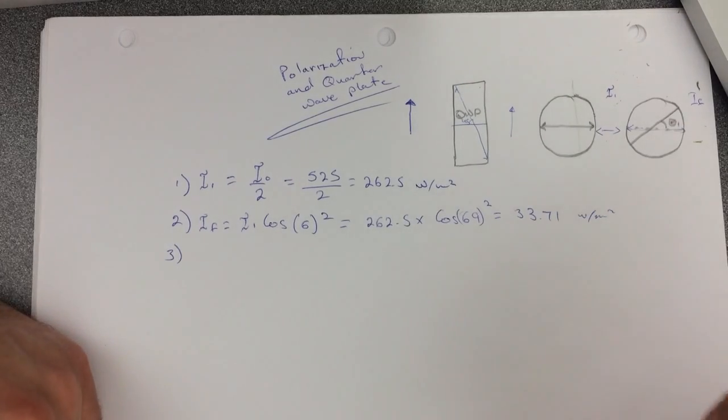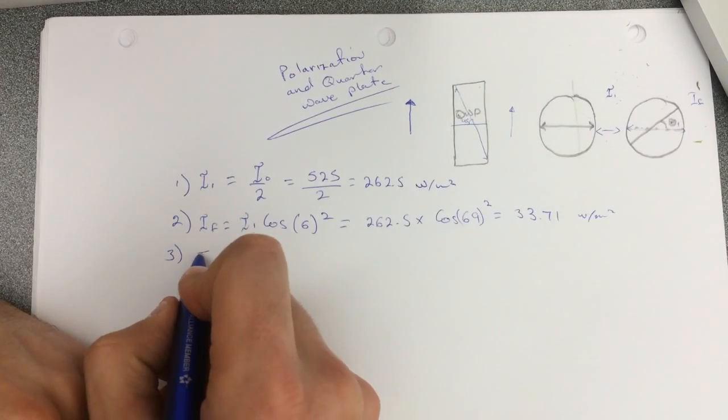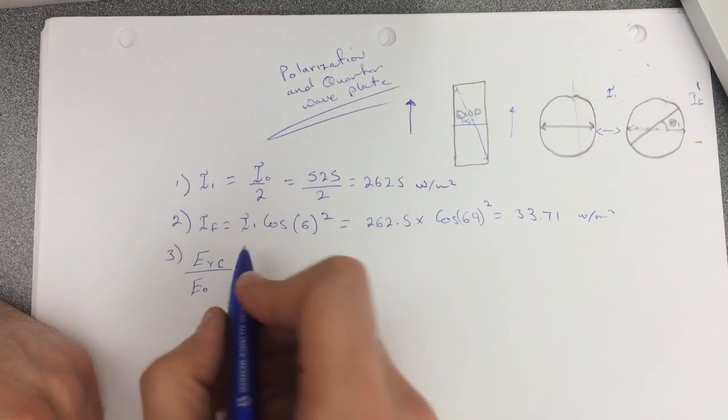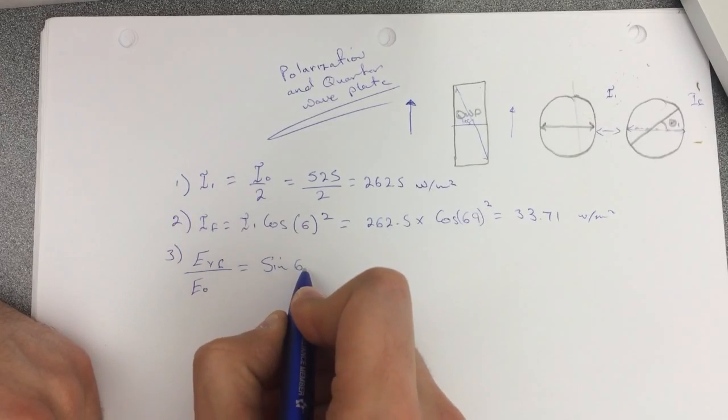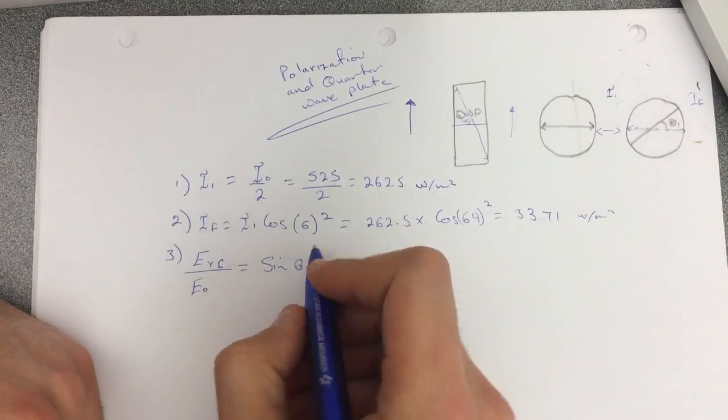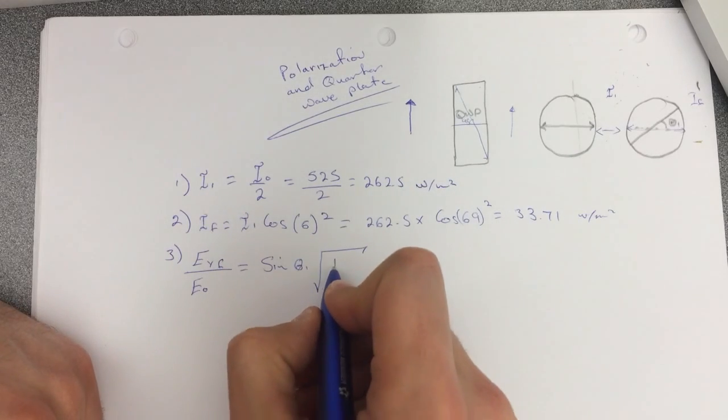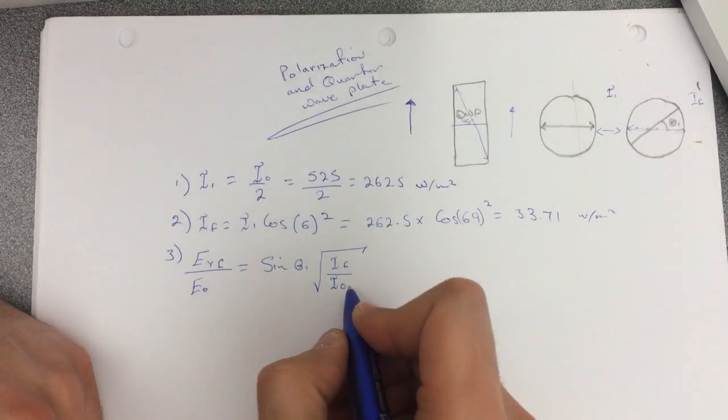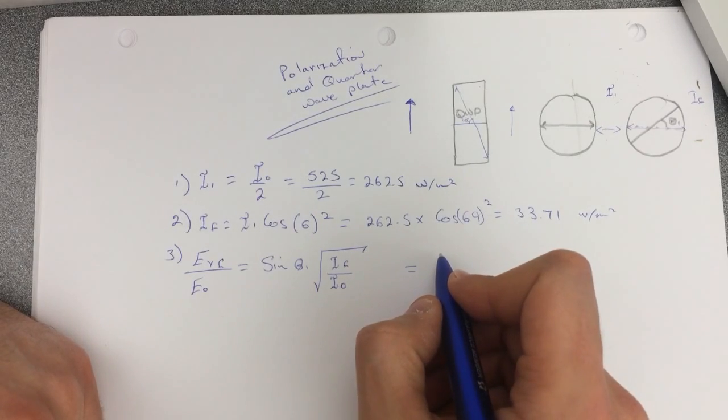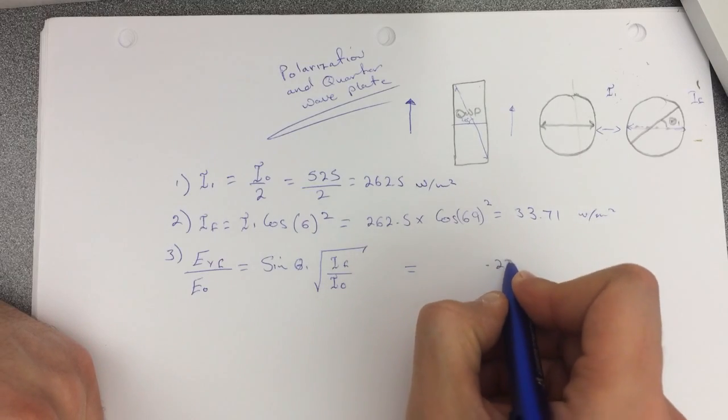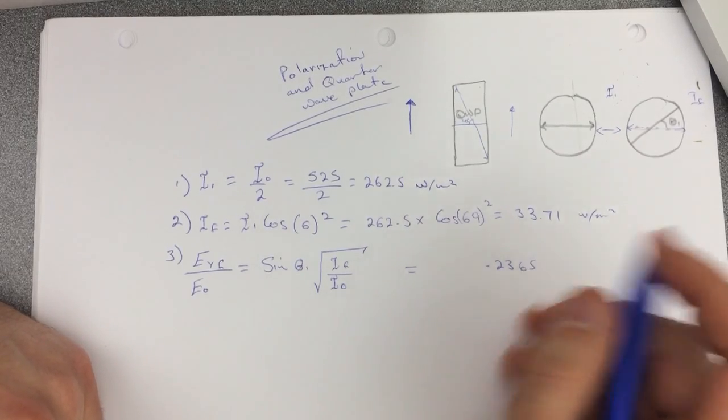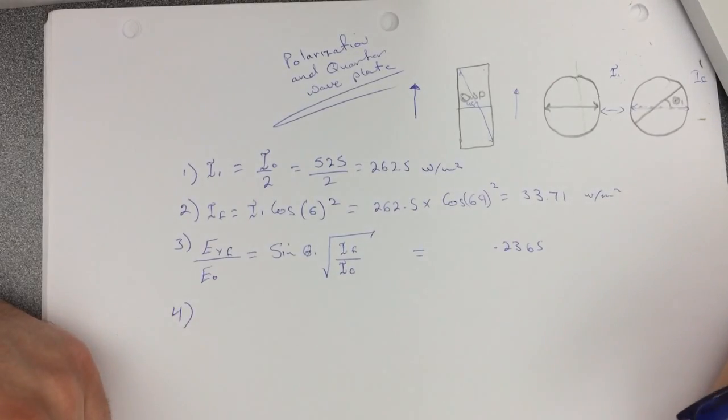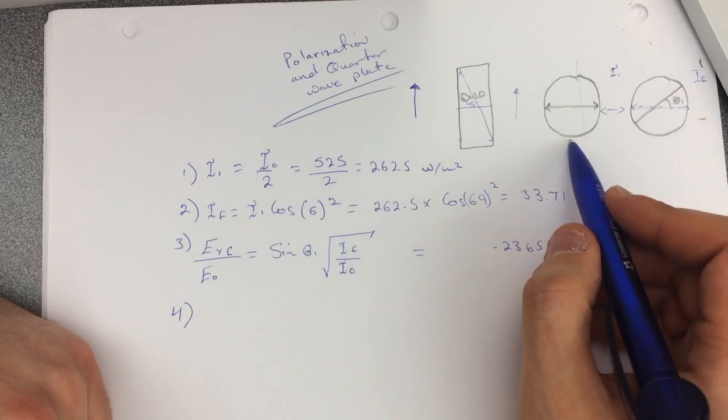All right, so question number three is asking this guy. I really am gonna get back to you with this but here's the equation, solve it. So it's Ey final over E initial, that's what they want, will be equal to the sine of theta, this is theta, times the intensity final over density initial. Okay, so for this guy I got 0.2365.